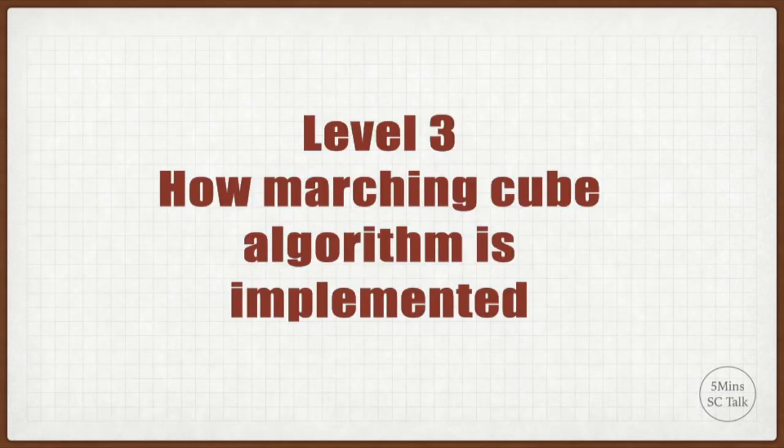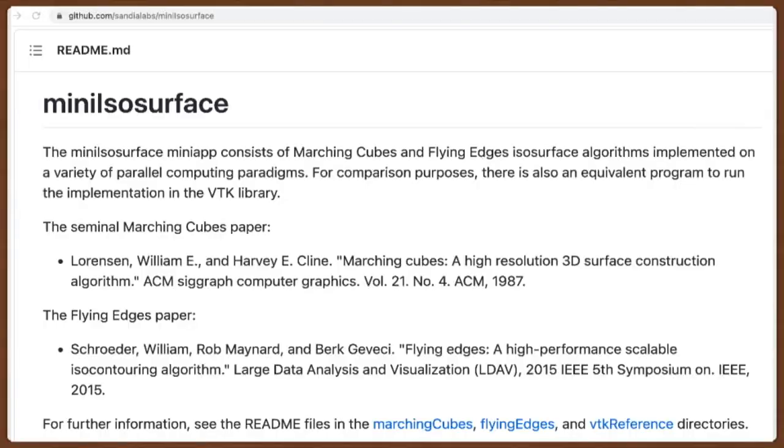For level 3, we try to further dive into the Marching Cube algorithm. We try to figure out how it is implemented. Let's take the VTK library as an example to explain it in details. The VTK library contains different implementations of the Marching Cube algorithm with different efficiencies, such as VTK Contour, VTK Marching Cubes, and VTK Flying Edges. We mainly look at the VTK Marching Cubes in this article.